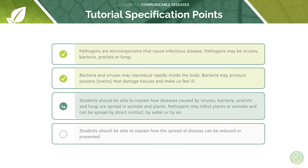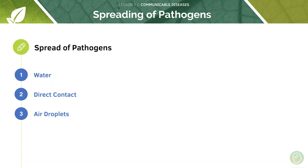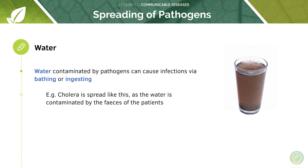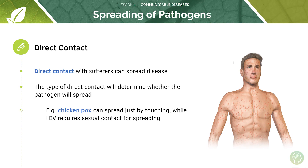Now let's look at how diseases can be spread. First, diseases can be spread by water — water contaminated with pathogens can cause infections because the pathogens can survive in the water and spread to other people. For example, cholera is spread this way because water becomes contaminated with the faeces of patients. Pathogens can also be spread via direct contact — chickenpox can spread by touching, and HIV requires sexual contact for spreading, so having unprotected sex can cause the spread of HIV.